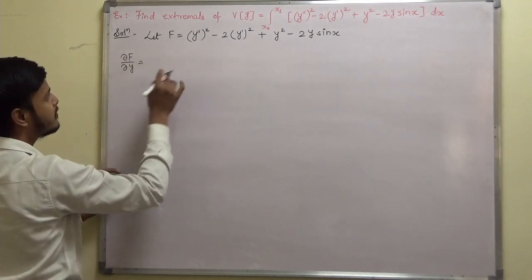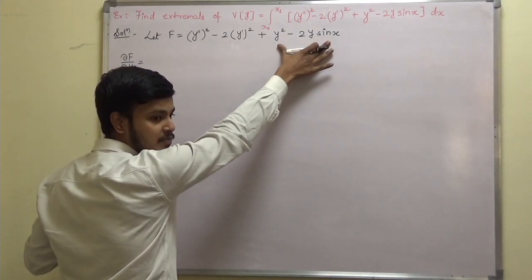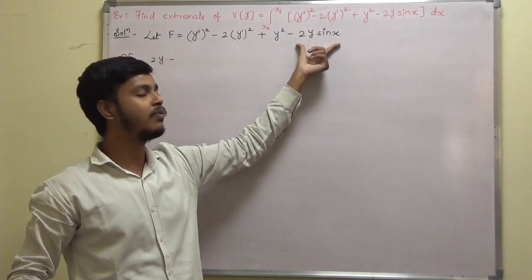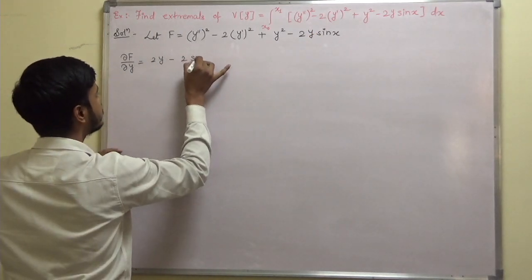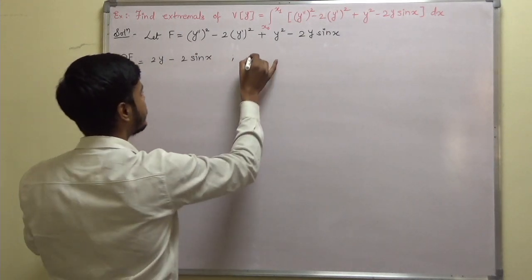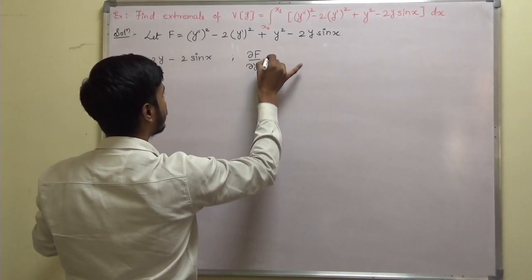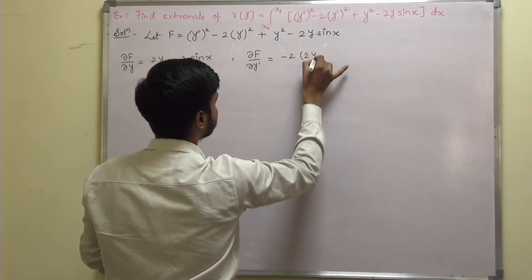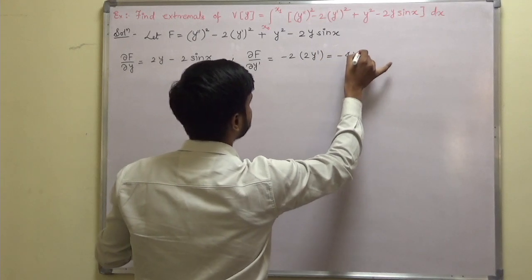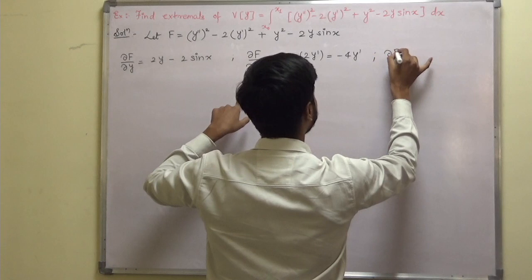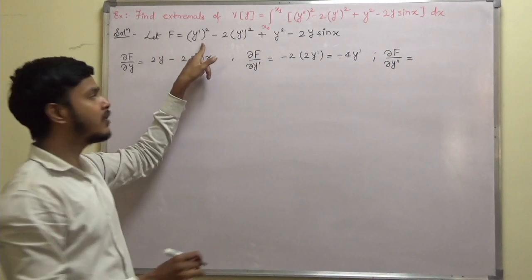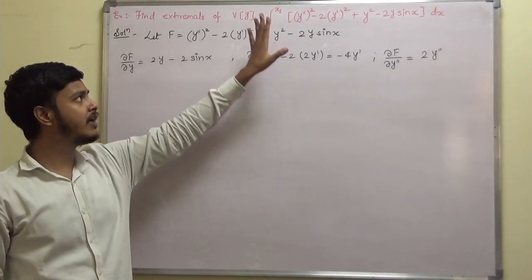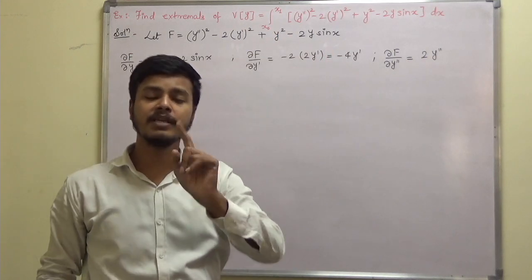First, find ∂f/∂y. There are terms of y: derivative of y² is 2y, minus derivative of 2y sine x with respect to y gives minus 2 sine x. Next, ∂f/∂y-dash: there is a term of y-dash, so minus 2 times derivative of y-dash squared is 2y-dash, giving minus 4y-dash. Then ∂f/∂y-double-dash: there is a term of y-double-dash in the very first term of f, so its derivative is 2y-double-dash.